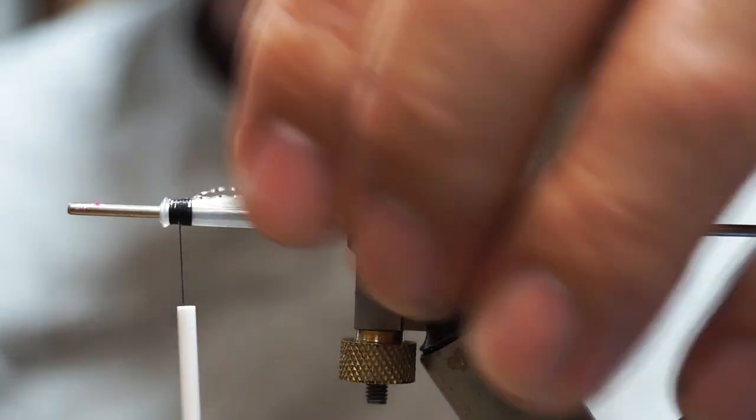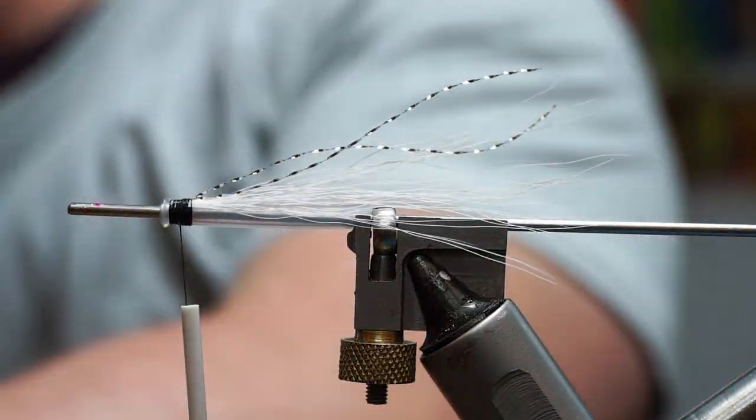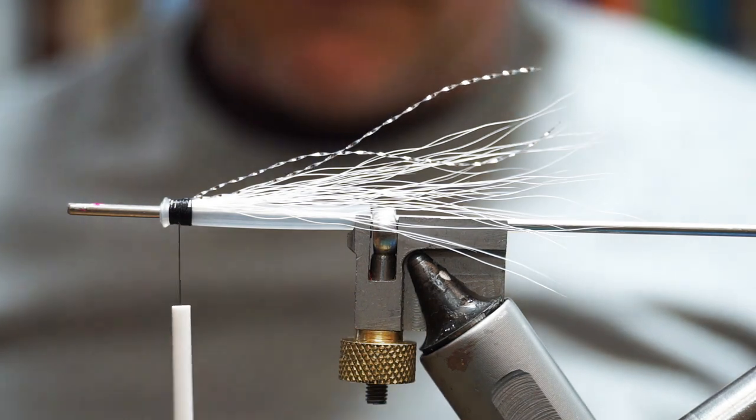For the wing, what I'm simply going to use is black fox. So if you take a little bunch of black fox, now obviously the better quality the better here because it will have that sort of natural taper to it.